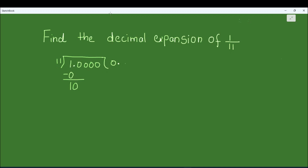Since 10 is not divisible by 11, we put a 0 in the quotient because 11 times 0 is 0. Subtracting gives 10, then we drop down the next 0, giving us 100. We divide 100 by 11: 11 times 9 is 99, so 100 minus 99 equals 1 as the remainder.